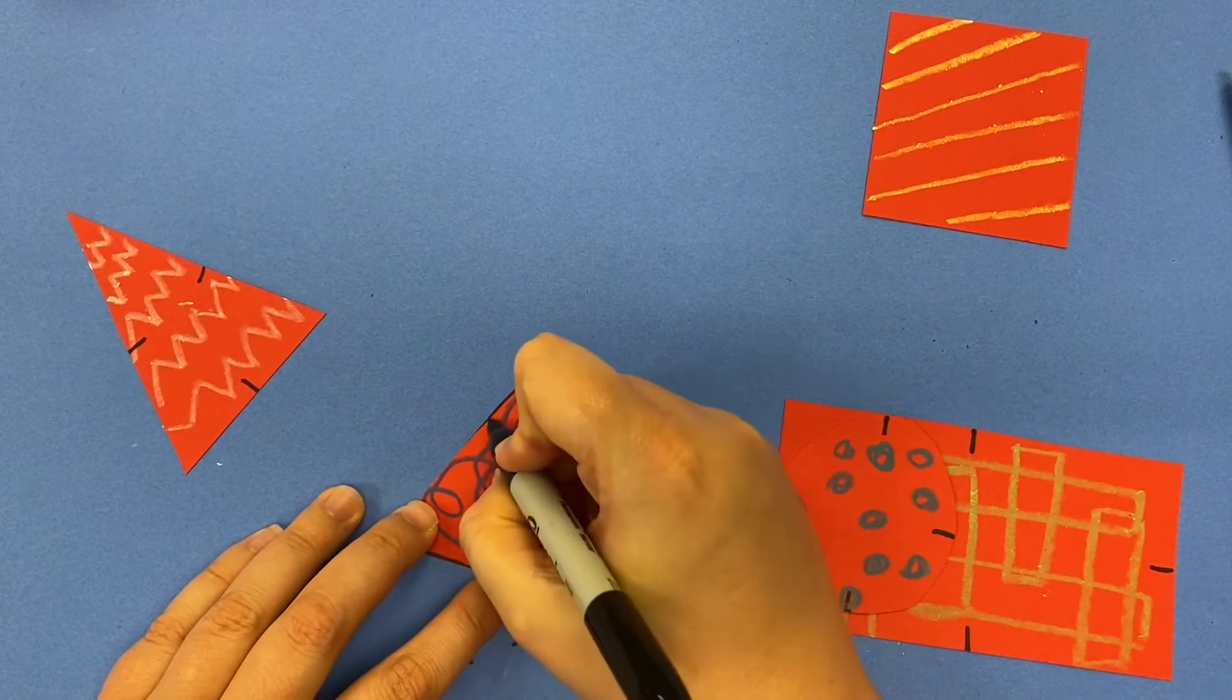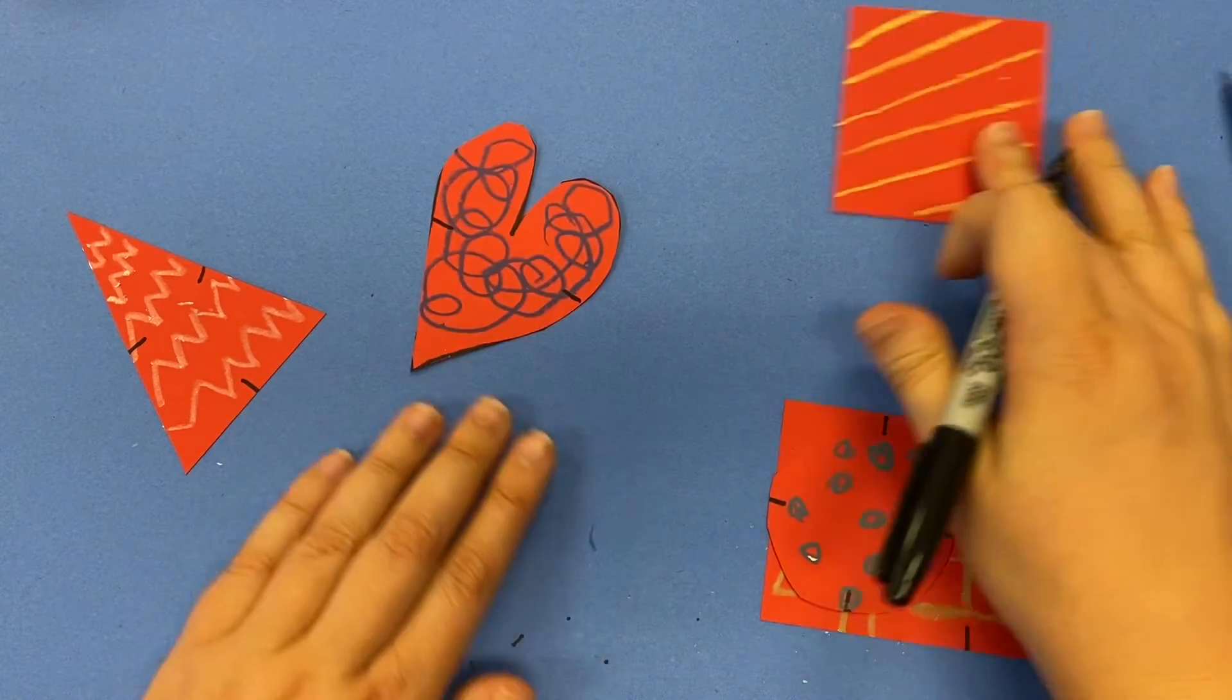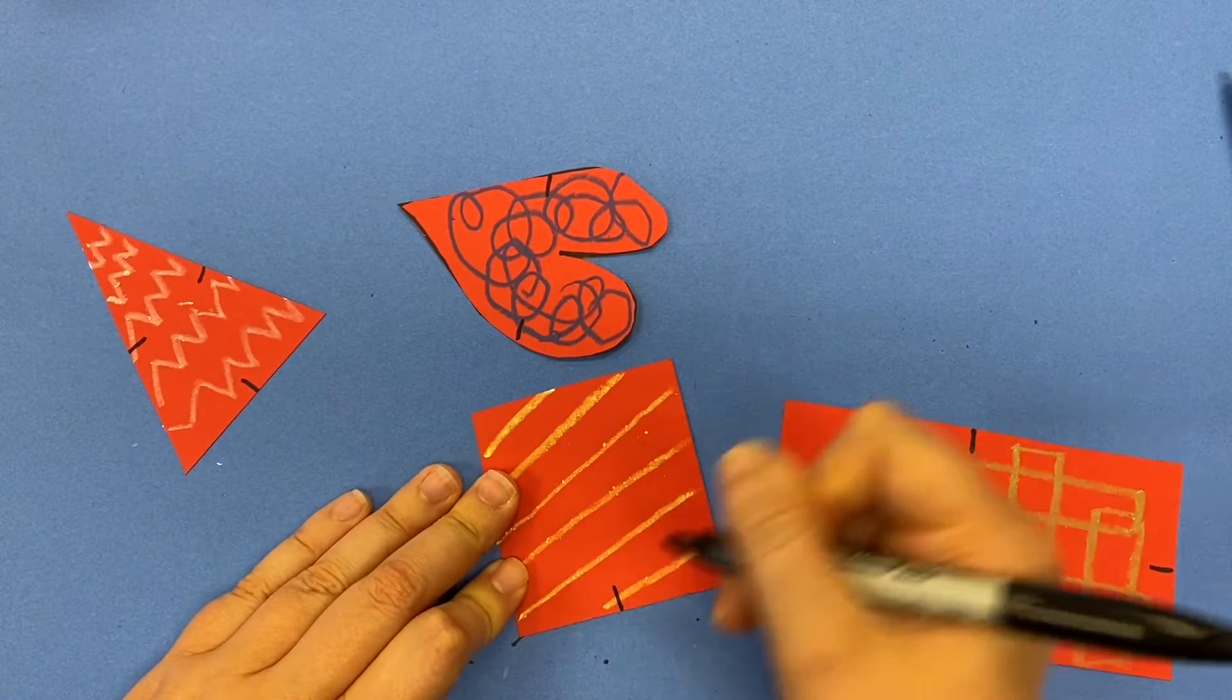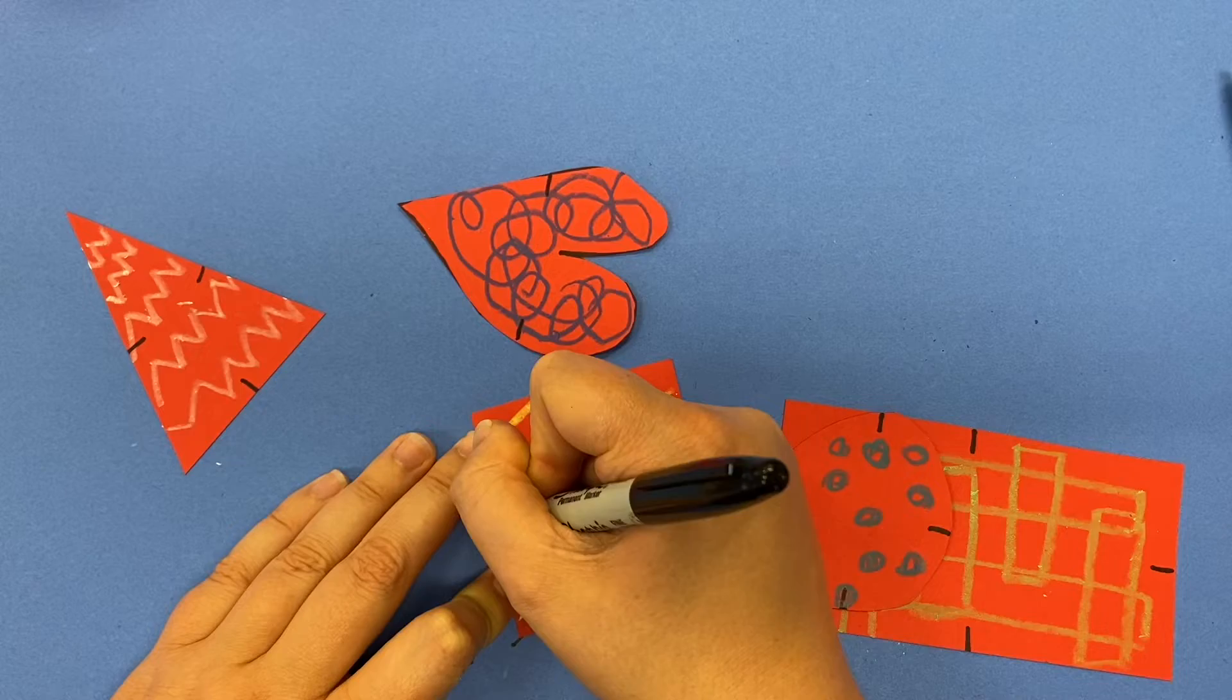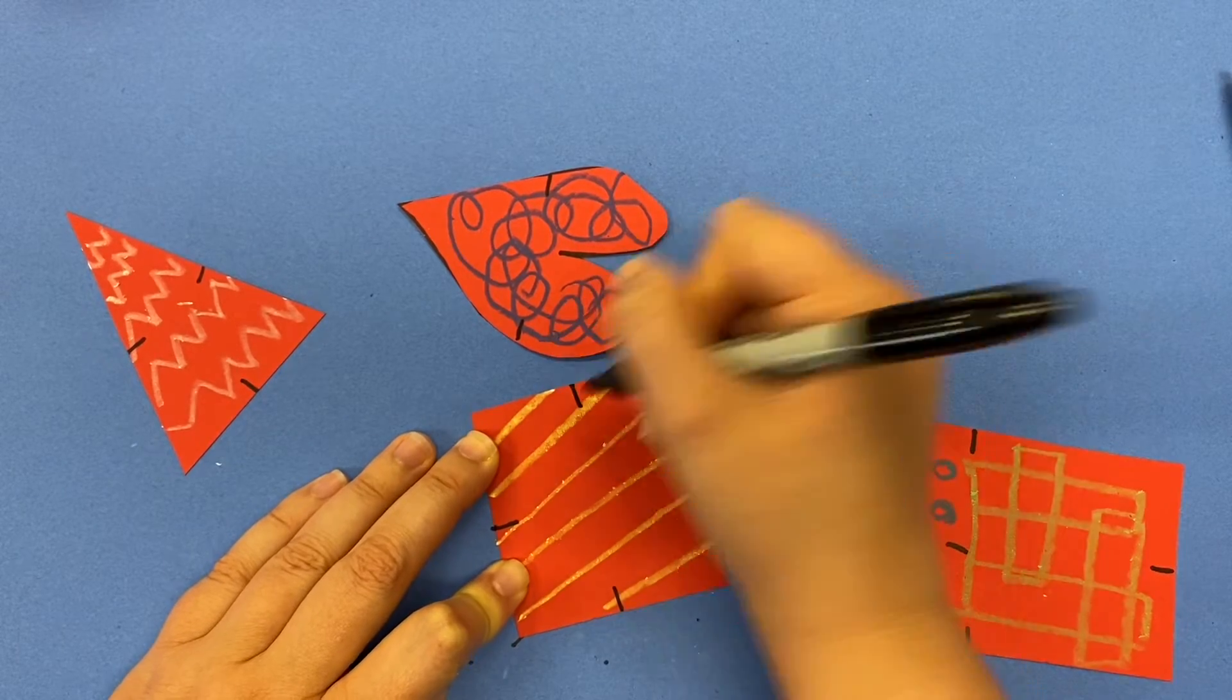This heart kind of has two sides, so I'm only going to do two. And then my square has four sides. So I'll go ahead and do four.